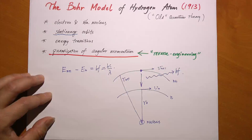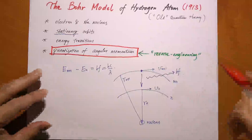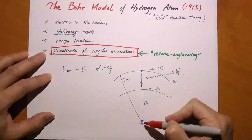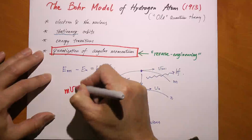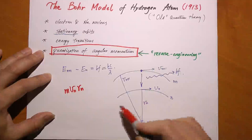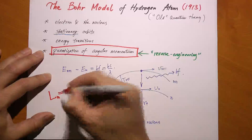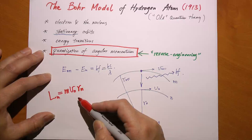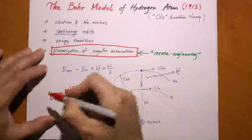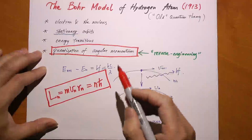That key hypothesis is called quantization of angular momentum—this is the centerpiece of the Bohr model. For an orbital with radius r_n, if the mass of the electron is m, its momentum is m times v_n. Multiplying by r_n gives the magnitude of the angular momentum L. According to Bohr, this angular momentum cannot assume just any value; it must be a multiple of h-bar, where h-bar is h over 2 pi. This is the quantization of angular momentum; without it, the Bohr model will not agree with experiment.